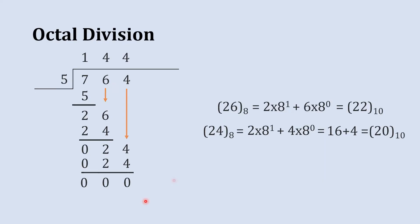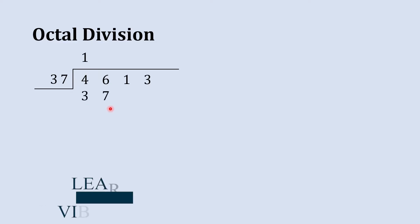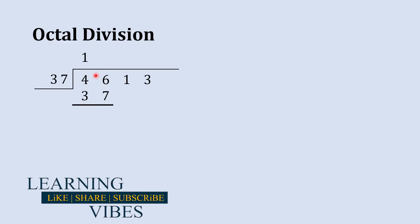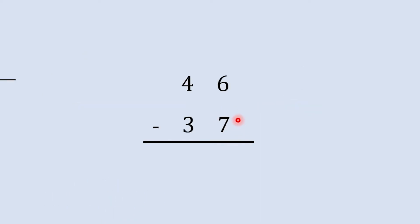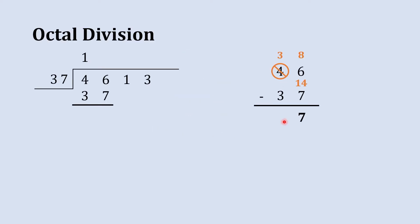Now let's see a more complex example. We are going to divide 4613 by 37. This 46 is larger than 37, so we can divide: 37 ones are 37. Now subtract 37 from 46 — we do it separately. We can't subtract 7 from 6, so we borrow: we get 8 here and 3 here. 8 plus 6 is 14, so 14 minus 7 is 7, and 3 minus 3 is 0. The subtraction result is 7.